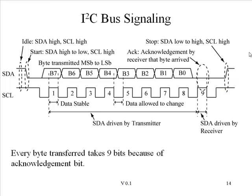In between those start and stop points, a series of bytes will be transmitted and received. Bytes are transmitted from the most significant bit down to the least significant bit. After eight bits are transmitted, a ninth bit — the acknowledge bit — is sent by the receiver of the transmission to indicate whether the transmission was successful or additional steps need to be taken. So every byte transferred takes nine bits, not eight, because of that additional acknowledge bit.